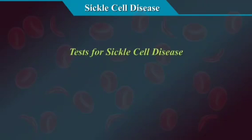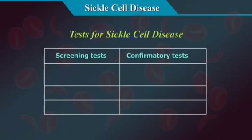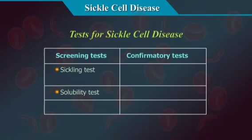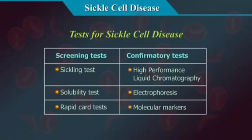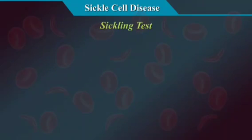Tests for sickle cell disease include: 1. Screening tests — the sickling test (described in detail here), solubility test, and rapid card tests. 2. Confirmatory tests — HPLC, electrophoresis, and molecular markers.